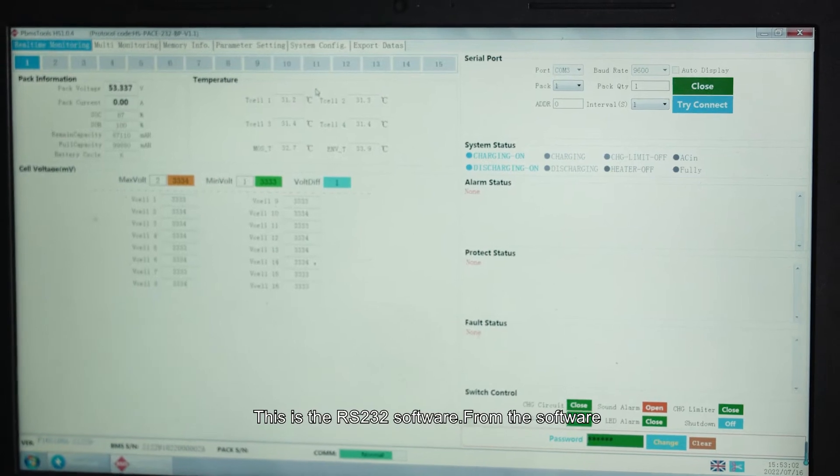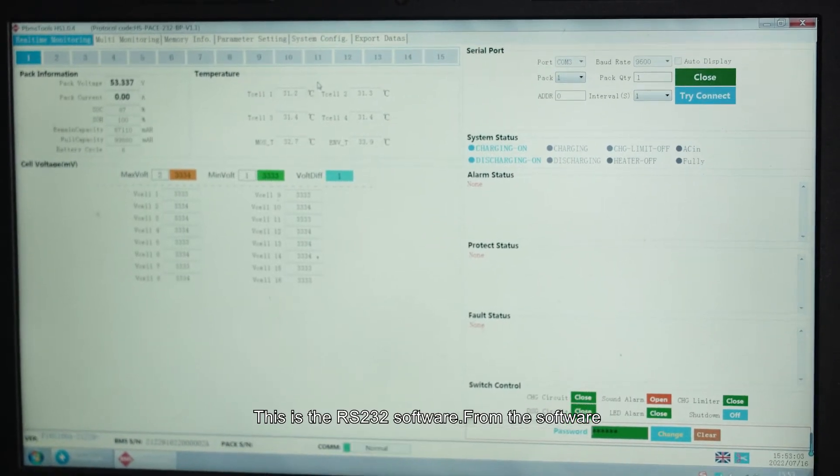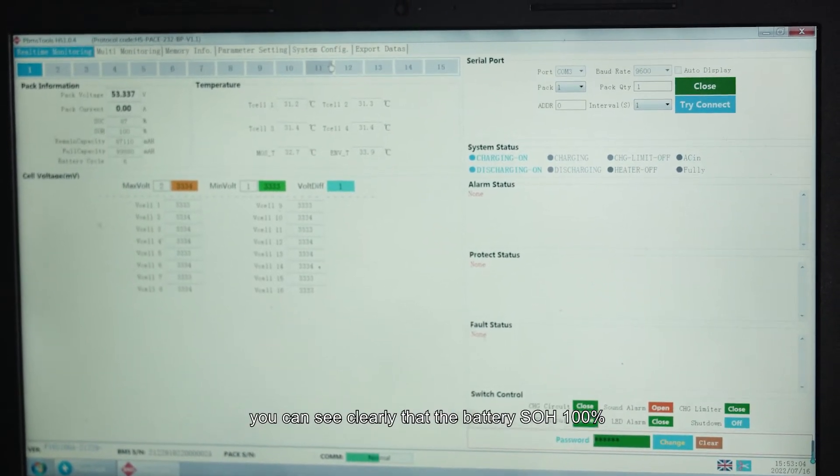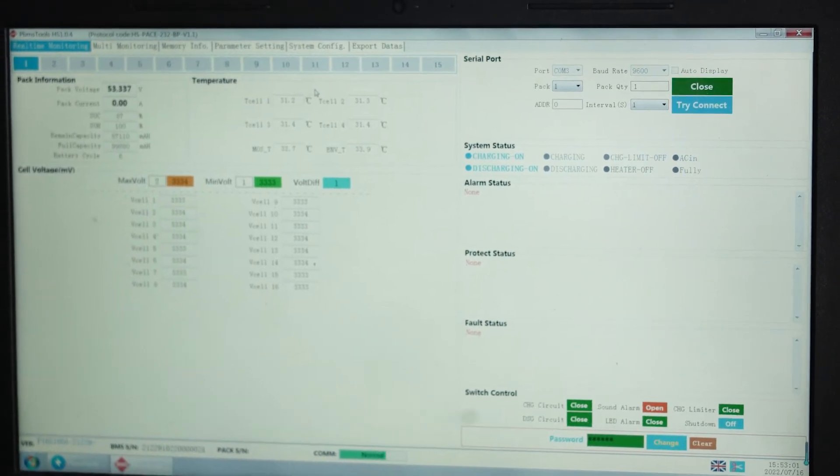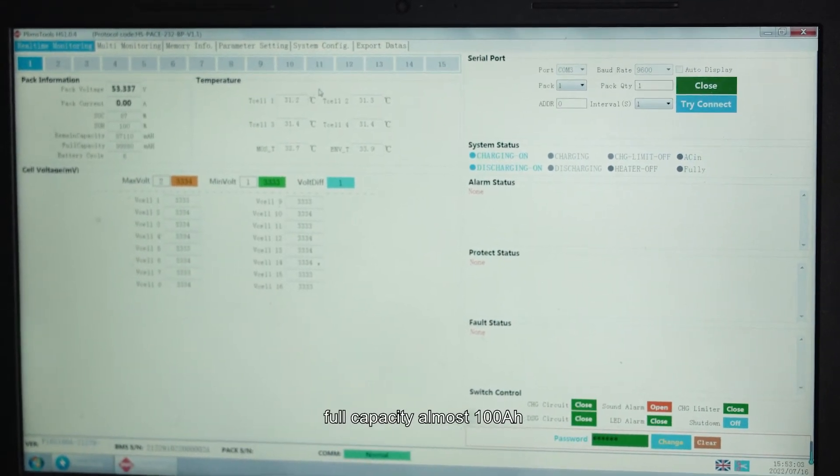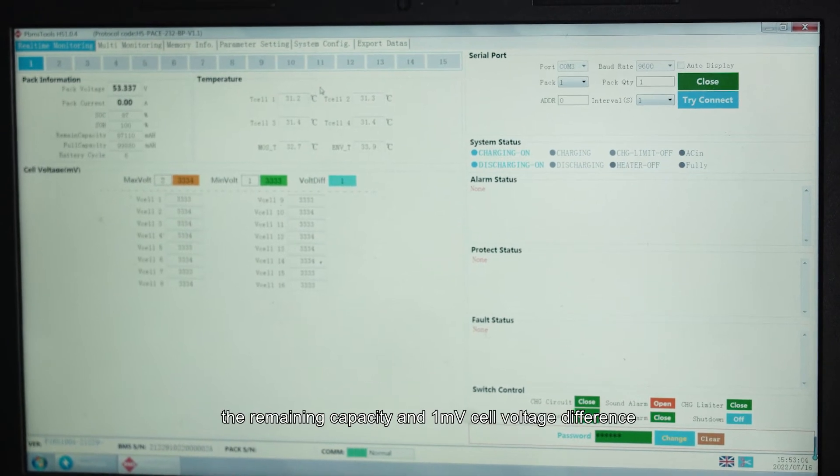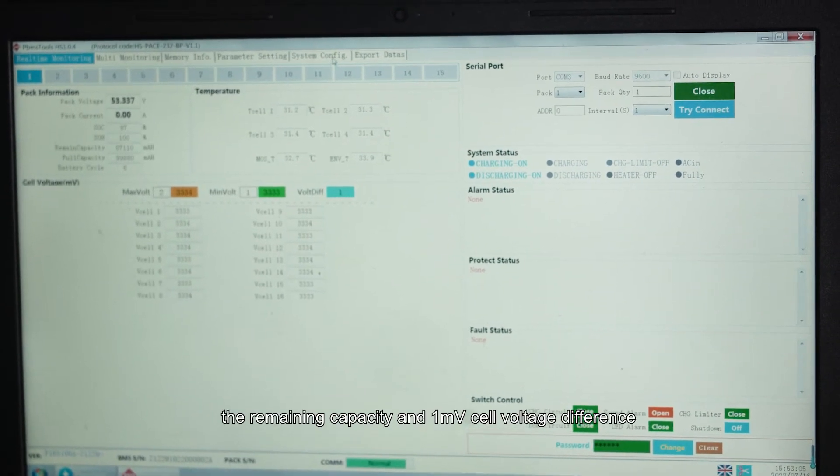This is the RS232 software. From the software, you can see clearly the battery SOH 100%, for a capacity of almost 100 ampere, the remaining capacity and 1 mW cell voltage difference.